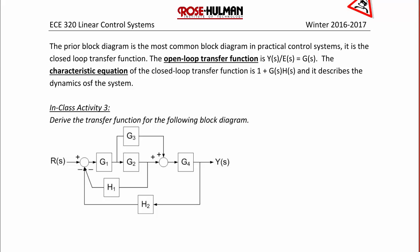The prior block diagram is the most common block diagram in practical control systems. It is the closed loop transfer function, where the open loop transfer function is Y(s) over E(s), which equals G(s). The characteristic equation of the closed loop transfer function is the denominator of T(s), which is 1 plus G(s) and H(s). It is very important because it describes the dynamics of a system, and we use it a lot to find things such as poles,